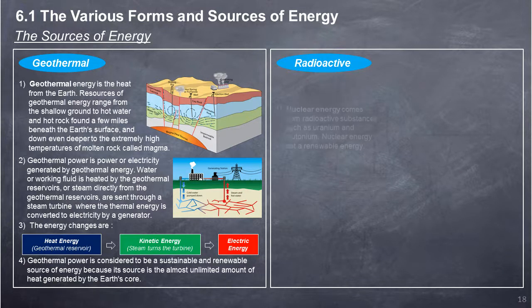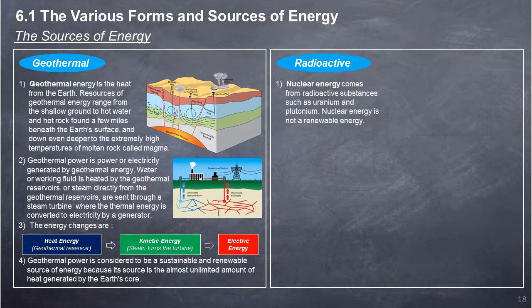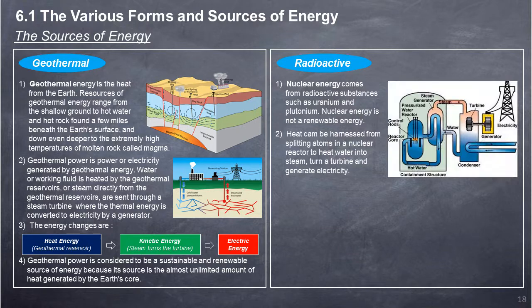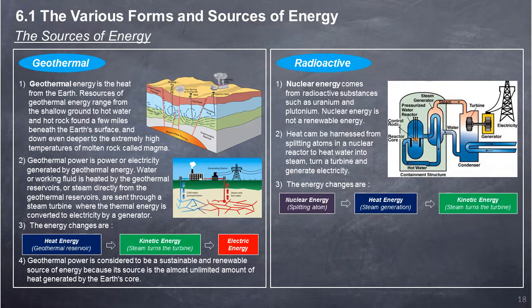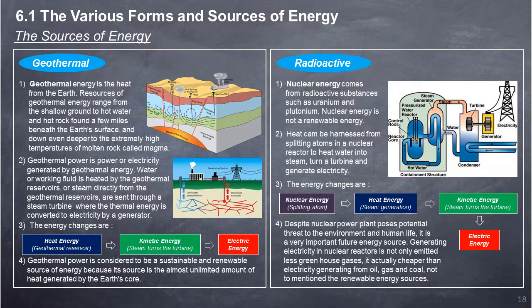Radioactive/Nuclear Energy: Nuclear energy comes from radioactive substances such as uranium and plutonium. Nuclear energy is not a renewable energy. Heat can be harnessed from splitting atoms in a nuclear reactor to heat water into steam, turn a turbine, and generate electricity. The energy change is: nuclear energy of splitting atoms → heat energy of steam generation → kinetic energy of steam turning the turbine → electric energy. Despite nuclear power plants posing potential threats to the environment and human life, nuclear energy is an important future energy source. Generating electricity in nuclear reactors emits less greenhouse gases and is actually cheaper than generating electricity from oil, gas, coal, and renewable energy sources.